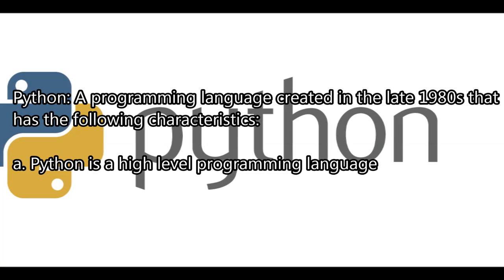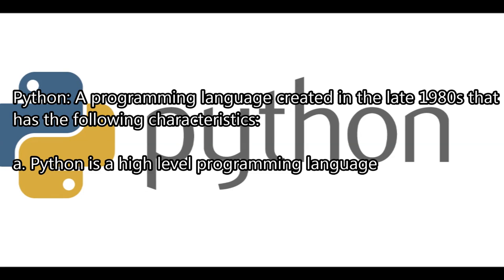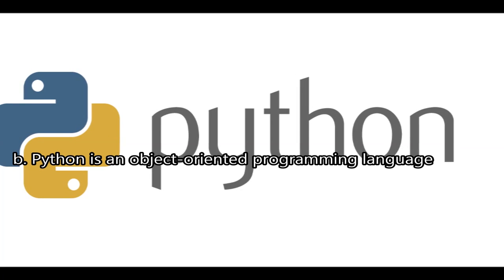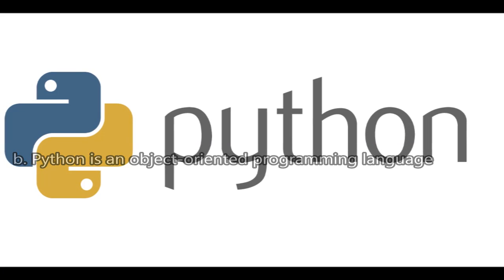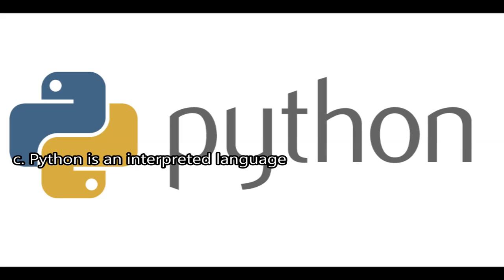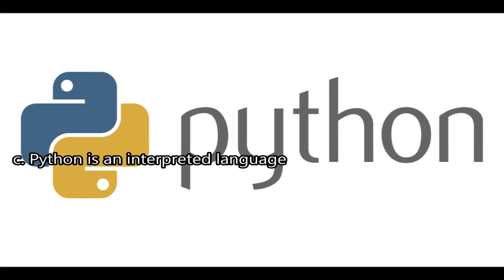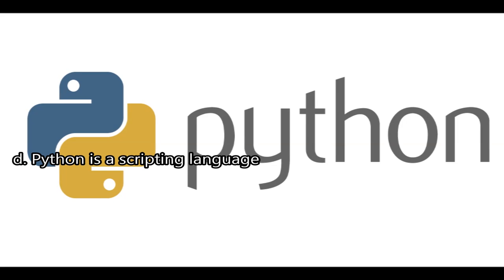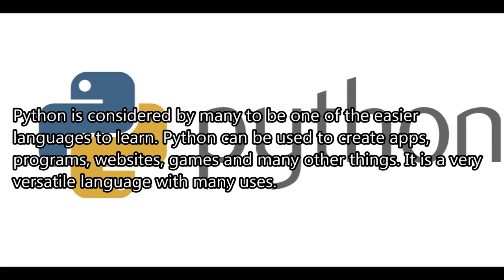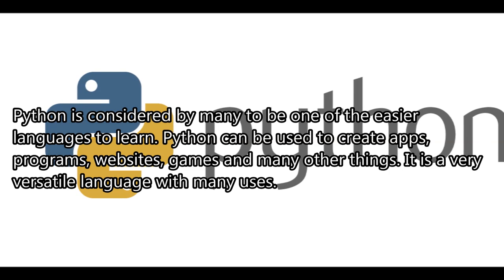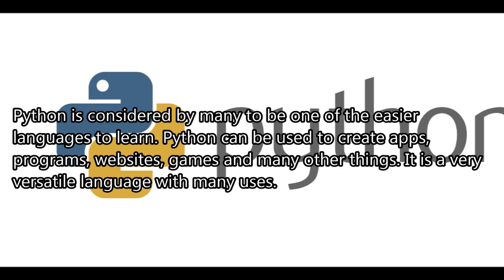Python — a programming language created in the late 1980s with the following characteristics: A) Python is a high-level programming language, which means it looks similar to English. B) Python is an object-oriented programming language, which means it focuses more on data and objects. C) Python is an interpreted language, which means it has an interpreter built in that converts high-level language to low-level instructions the computer can understand. D) Python is a scripting language — one can use Python to make scripts to automate things. Python is considered by many to be one of the easier languages to learn and can be used to create apps, programs, websites, games, and many other things.